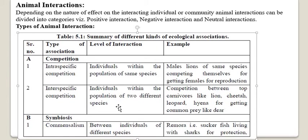Interspecific competition — 'inter' meaning between — is competition between two different species. Individuals within the population of two different species interact for food, or maybe because they share a similar habitat, competing for establishing superiority. For example, competition between top carnivores like lion, leopard, and hyena for getting common prey like a deer.